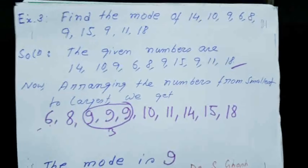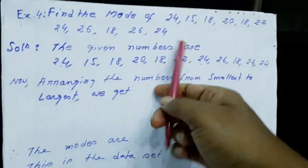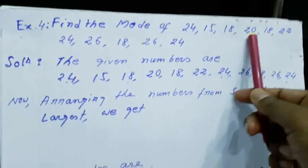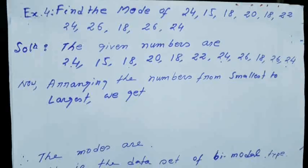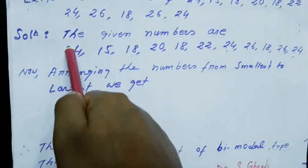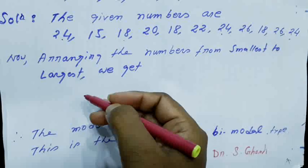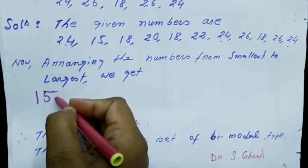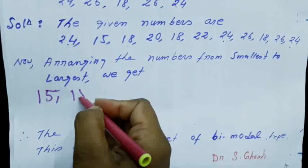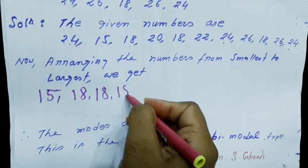Moving to the next problem. Find the mode of: 24, 15, 18, 20, 20, 18, 22, 24, 26, 18, 23, 24. Now we have to find out the mode. The given numbers are these. Arranging the numbers from smallest to largest: the smallest number is 15, then 18, 18, 18 — that is 3 times — then 20, then 20, then 22, then 23, then 24, 24, 24 — and then 26. There are 11 observations.